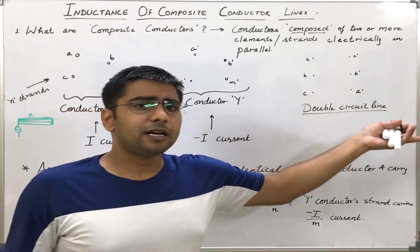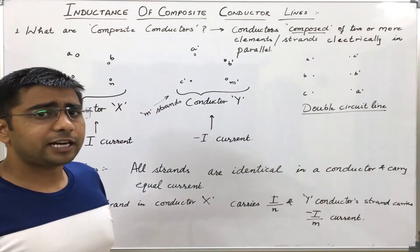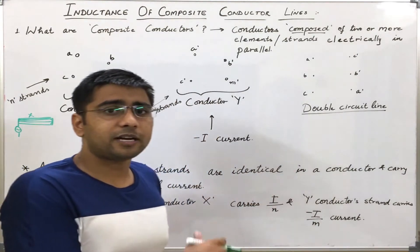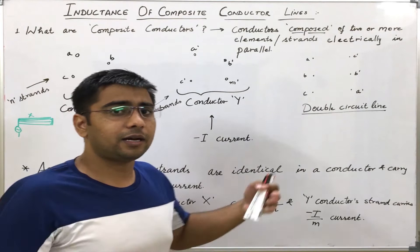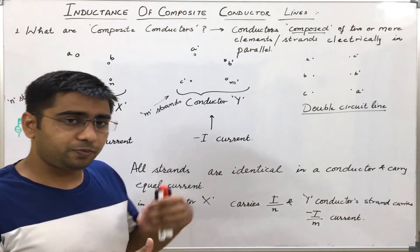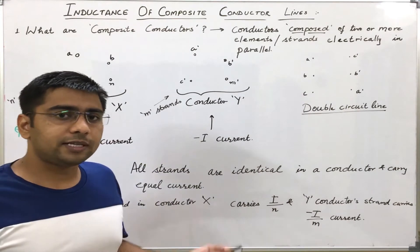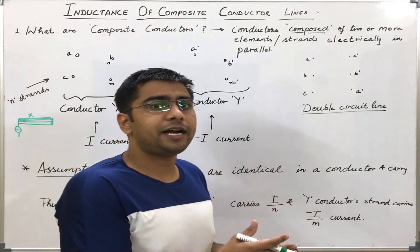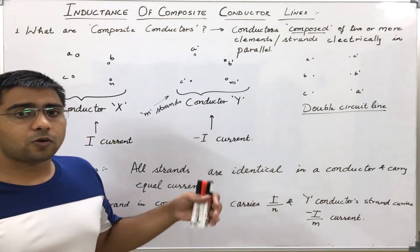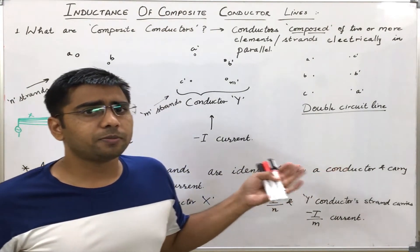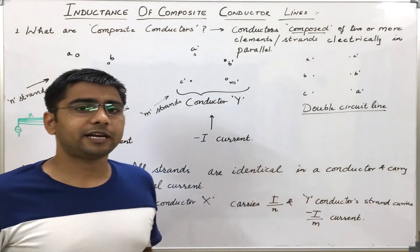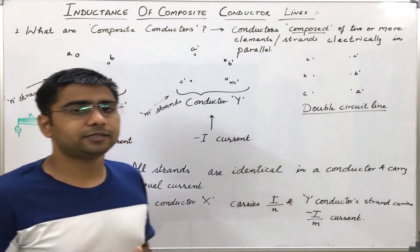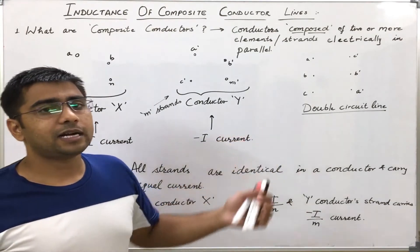Why do we use double circuit lines — why multiple circuit lines? So that we can utilize the same tower for transmission of more power and to multiple loads. Due to this, our right-of-way requirement — that is, the requirement for the passing of the transmission line towers — is reduced. And the cost is also reduced because we do not have to make one more line for the other circuit.